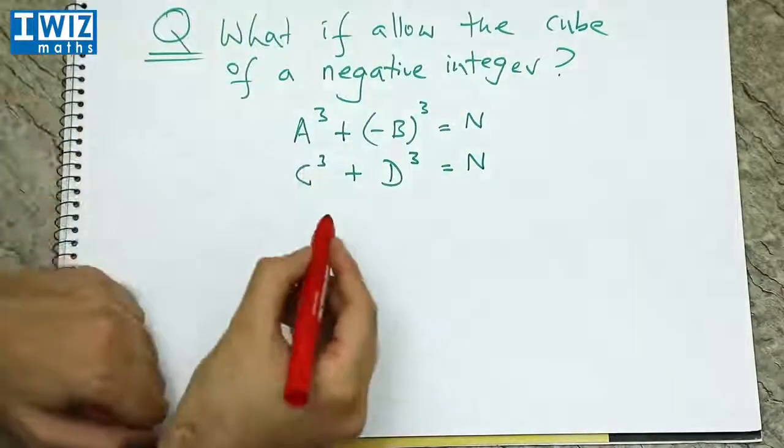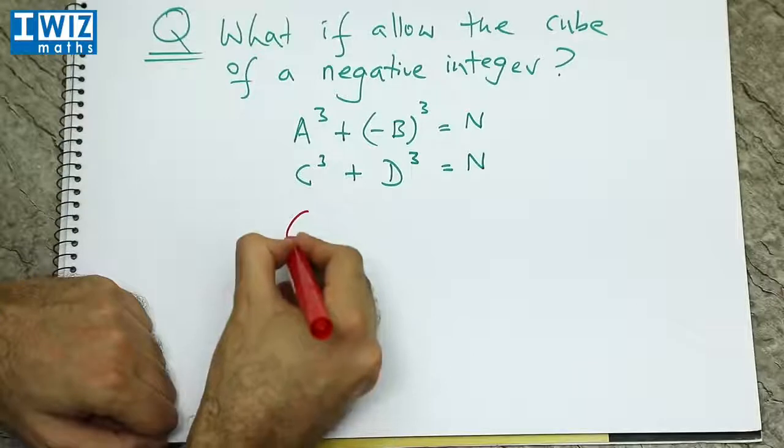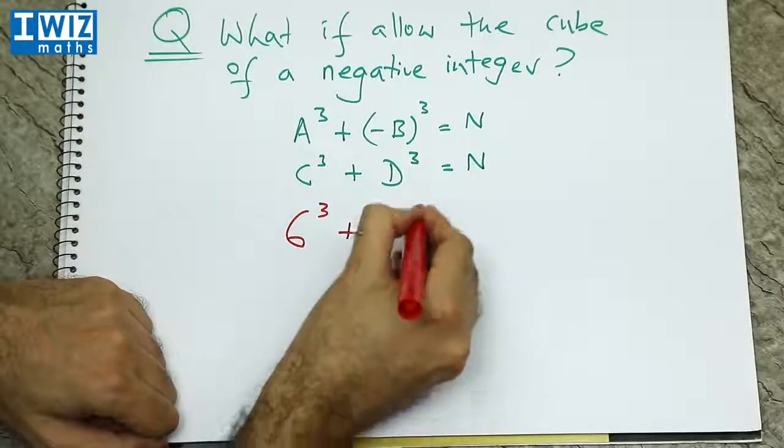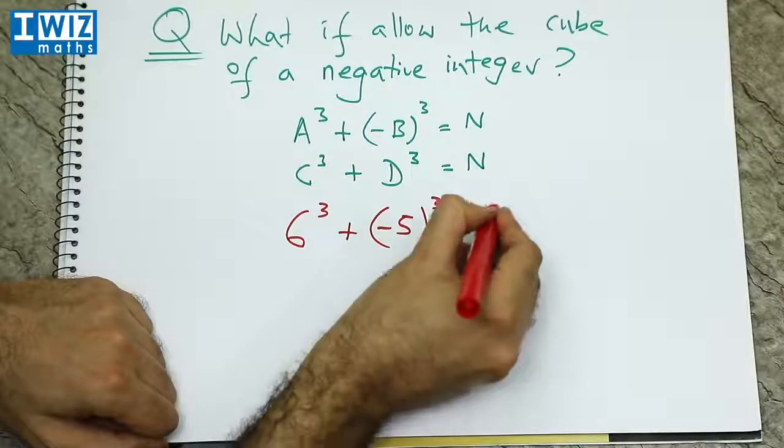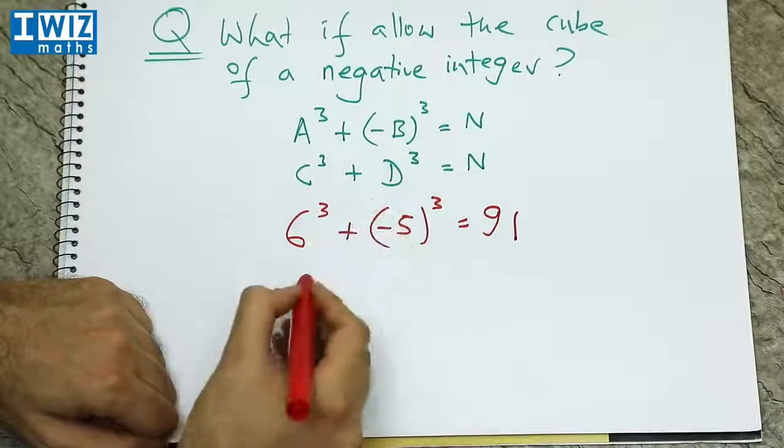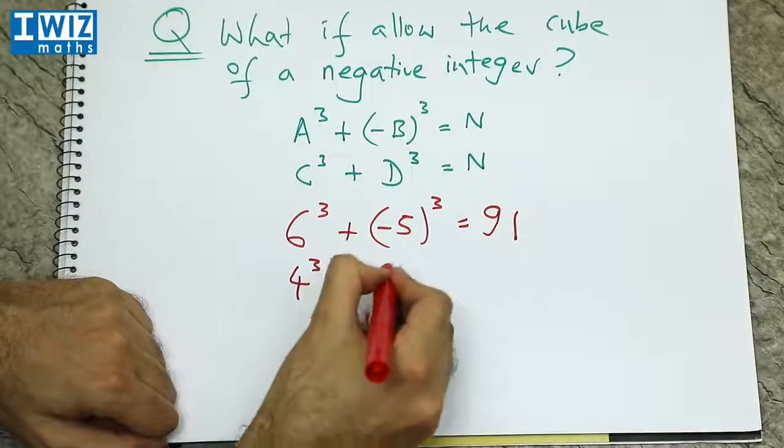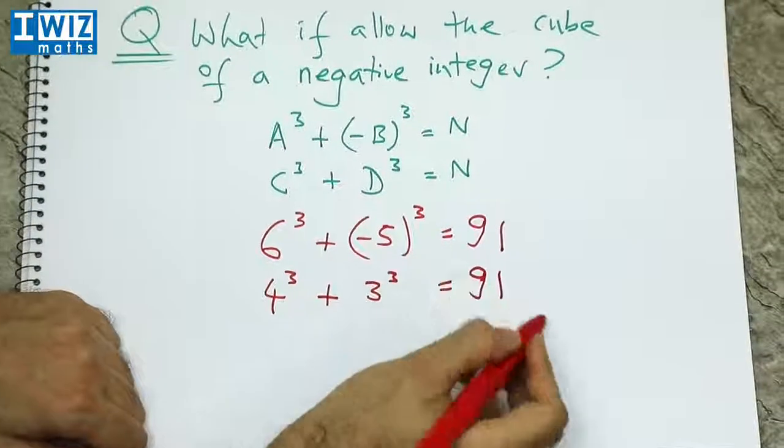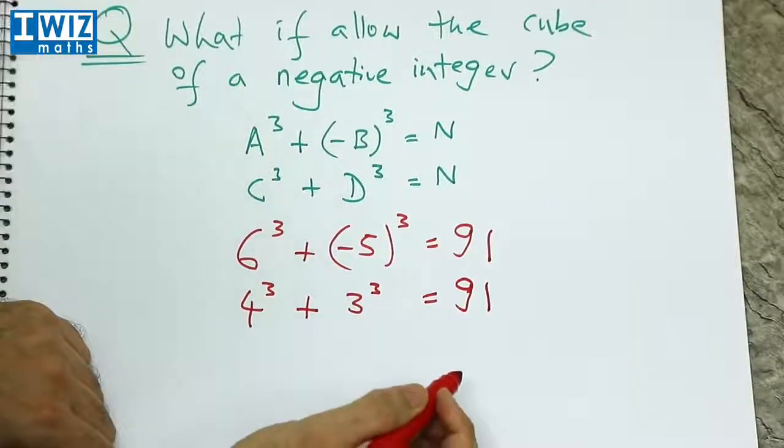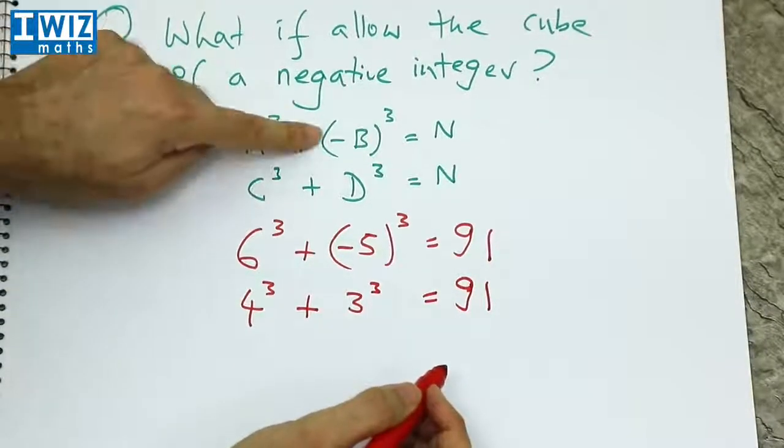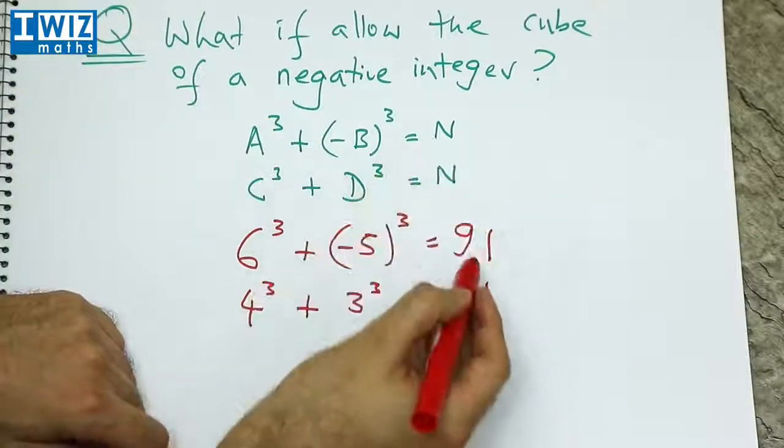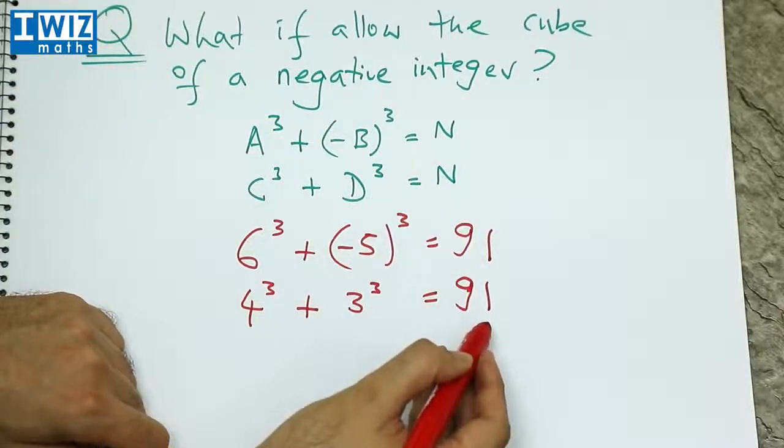The answer in this case is obviously different. So here we get 6 cube plus minus 5 cube, which is 91, and 4 cubed plus 3 cubed, which also works out to be 91. So we actually allow a negative integer to come into the picture. Then the number n here is 91.